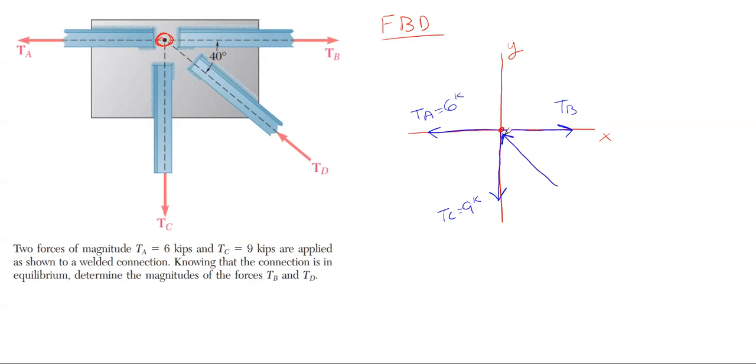Lastly, we have this TD force which is acting up and to the left, and it is 40 degrees off of the X axis. We need to find what TB is and what TD is.